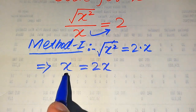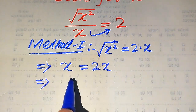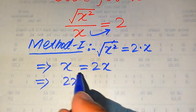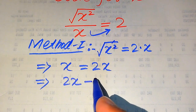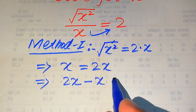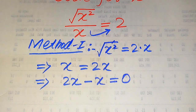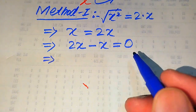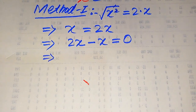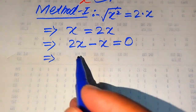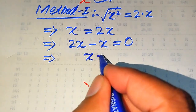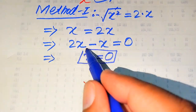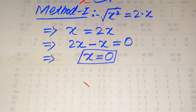To find the values of x, we move x to the right hand side. When we move the positive x to the right hand side, it becomes negative x, giving us 2x minus x equals 0. Both terms have the same variable, so when we subtract, we get x equals 0. So from the first method, the value of x is equal to 0.